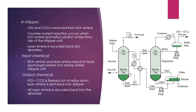H2S and CO2 are removed from rich amine. A counter-current reaction occurs when rich amine and reflux solution enter from the top of the stripper unit. Lean amine is recycled back to the absorber. Rich amine and lean amine react in a heat exchanger before rich amine enters the stripper unit. H2S and CO2 are flashed out of the reflux drum. Lean amine is sent back into the stripper and all lean amine is recycled back into the absorber.